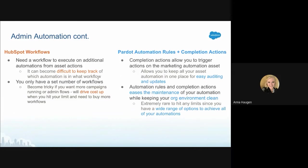In HubSpot, you only have a set number of workflows, and this can get expensive quickly — as you reach your limit of campaigns or admin flows, you have to buy more workflows. While in Pardot, you have automation rules, completion actions, and Engagement Studio — a wide range of different ways to do automation. It's easier for maintenance, it keeps your org clean, and it's very rare to hit any limit because you have that wide range of options to achieve all of your automations.